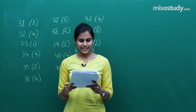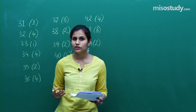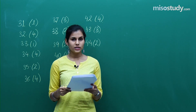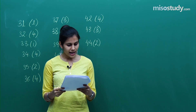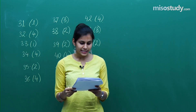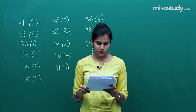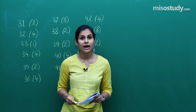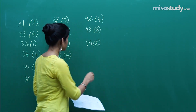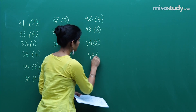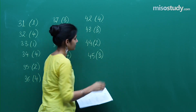Question 45 is a definite integration question from the 12th standard. The value of this particular integral from -π/2 to π/2 you were supposed to calculate, which comes out to be π/4. So question 45 has option 3 as the correct one.